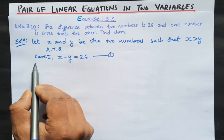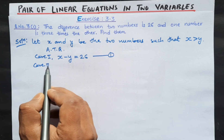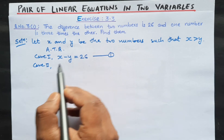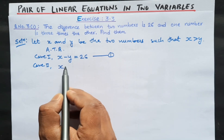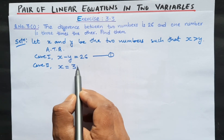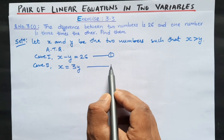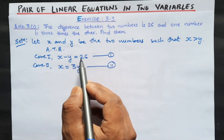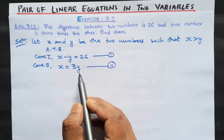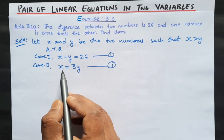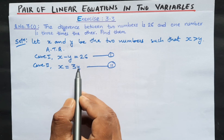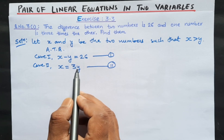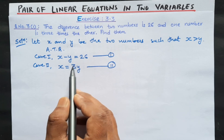And case 2: one number is three times the other. That means our greater number x is equal to three times y. So this is equation number 2. From equations 1 and 2, we have the value of x in terms of y. So now we will directly use the substitution method.